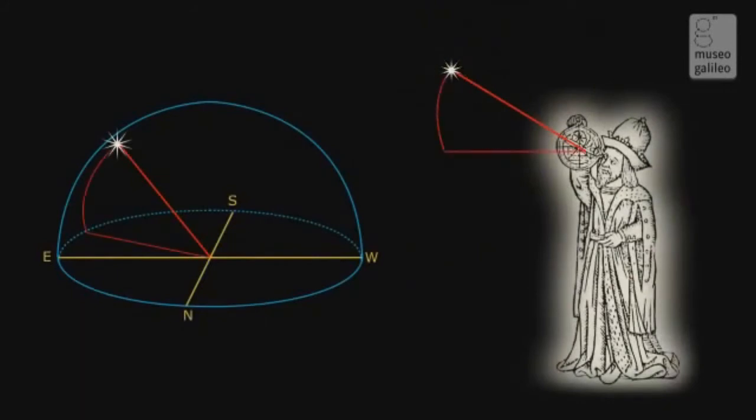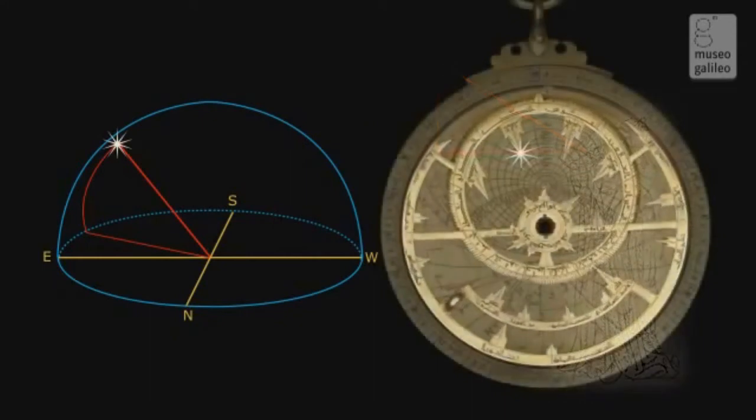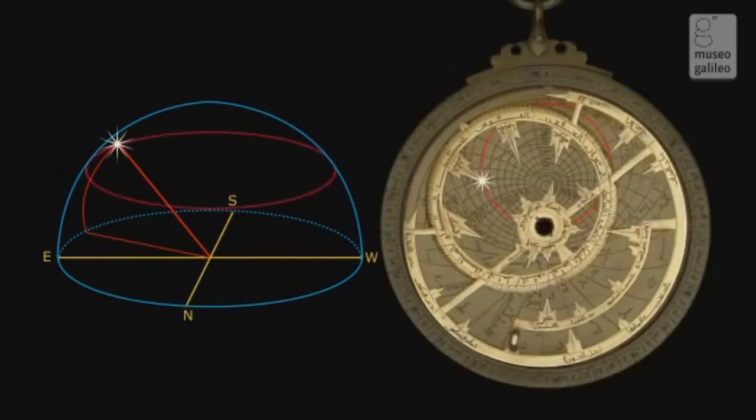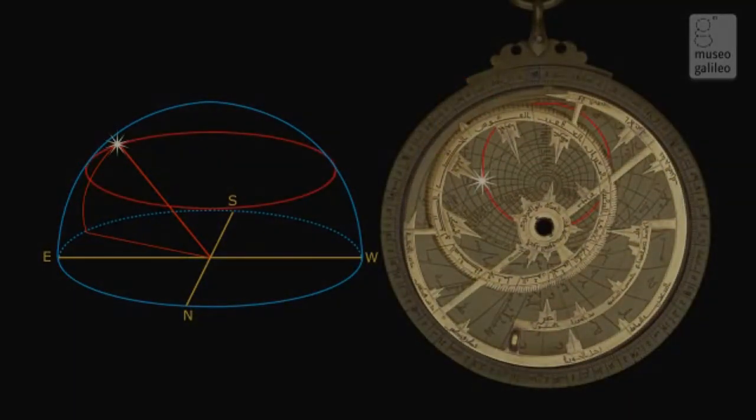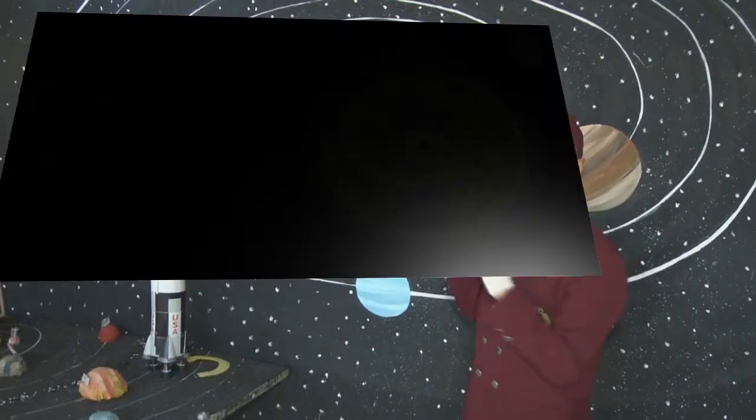Second, we read in the front of the astrolabe the altitude in degrees and we take note of the time of the day the reading was made.